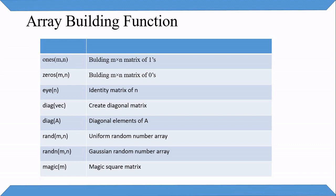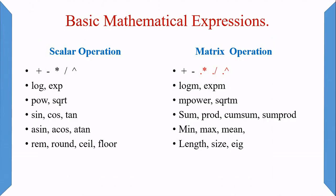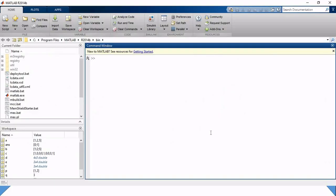For basic mathematical expressions, in scalar operations we use all the different operators. In matrix operations we also use these operators. For example, log(M) is for matrix logarithm, logm(M) for matrix log, expm(M) for matrix exponential, mpower for matrix power, and functions like sum and product.